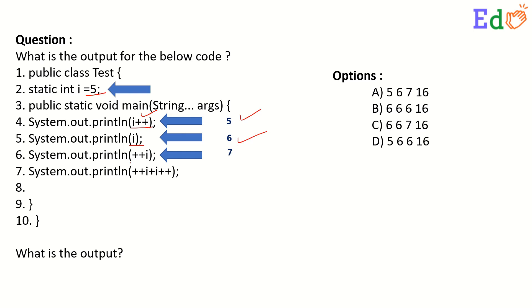Now here we are doing ++i. This is pre increment. So obviously the value will increase by 1 and it will be 7.